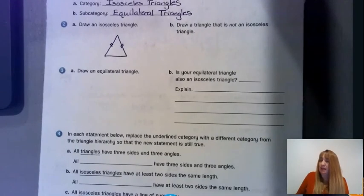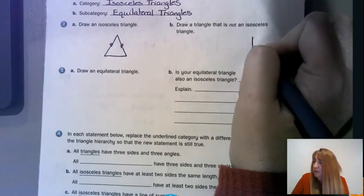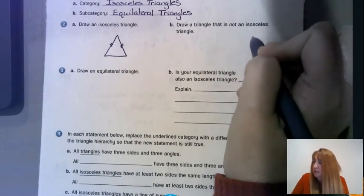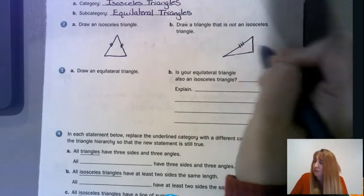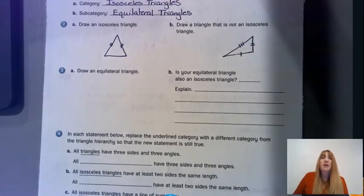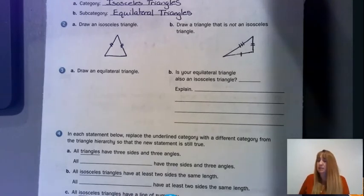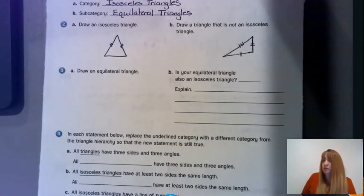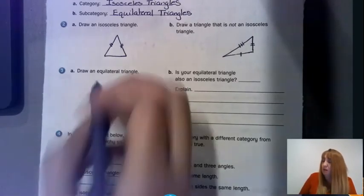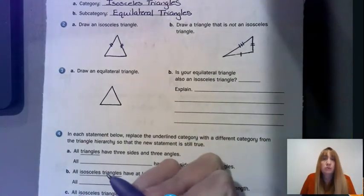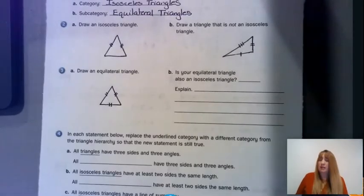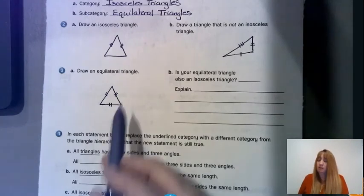For part B, draw a triangle that is not an isosceles triangle. I can put three tick marks on one side, two on another, and one on another — that proves each side is a different length, so that would definitely not be isosceles. For part C, draw an equilateral triangle — all three sides equal. If I put two tick marks on each side, all three sides are equal and the tick marks show they would be equal.